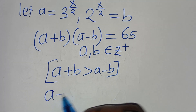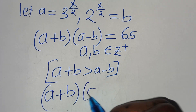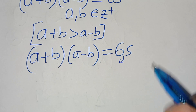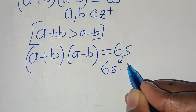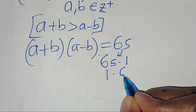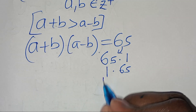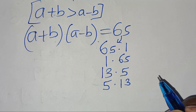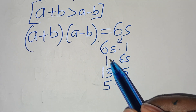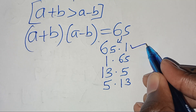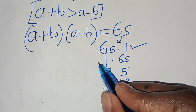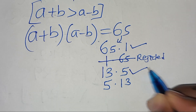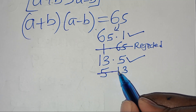This implies that a plus b multiplied by a minus b equals 65. We find the factor pairs of 65: 65 times 1, and 13 times 5. Since a plus b must be greater than a minus b, 65 greater than 1 satisfies the condition, while 1 less than 65 is rejected. 13 greater than 5 also satisfies the condition, while 5 less than 13 is rejected. So we have two cases.